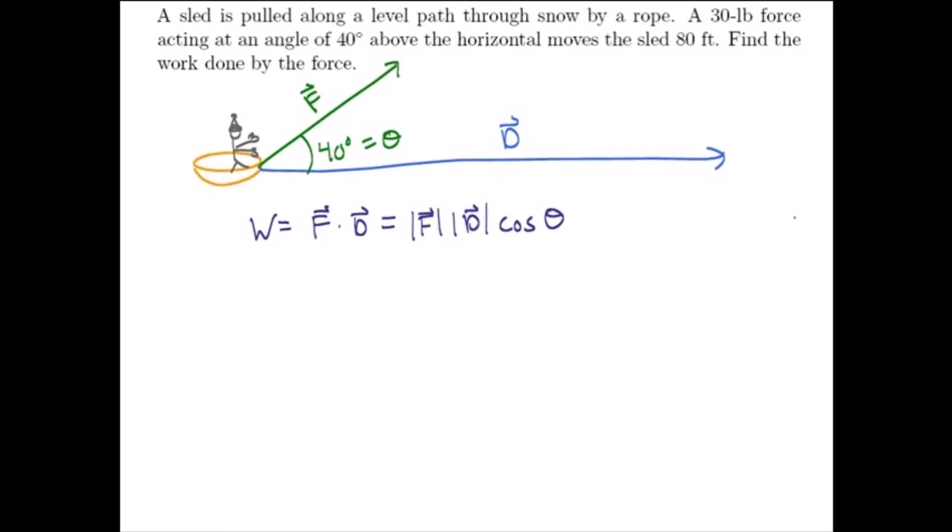Now what is the magnitude of F? Well, the magnitude of F is the amount of force being applied at that 40 degree angle, so the magnitude of F is equal to 30. And the magnitude of that displacement vector, that's how far the sled travels, that's equal to 80.